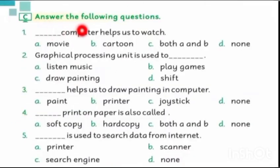Part C is answer the following questions. Number 1. Computer helps us to watch movie, cartoon, both A and B, and none. The computer helps us to watch movies and cartoons too. So we will put part C on both A and B. You can click both A and B or circle.